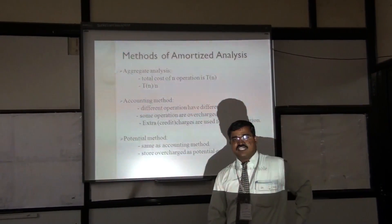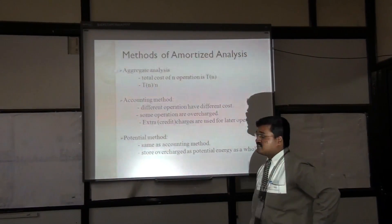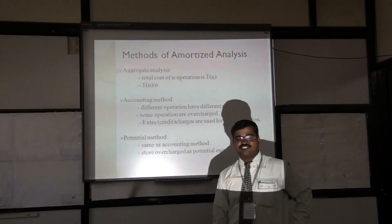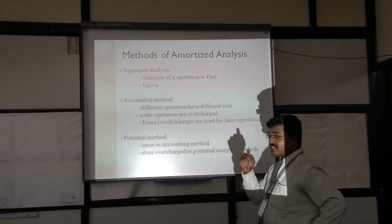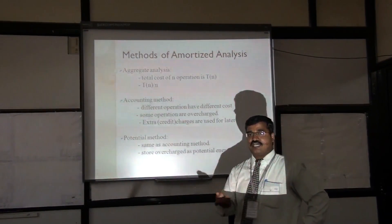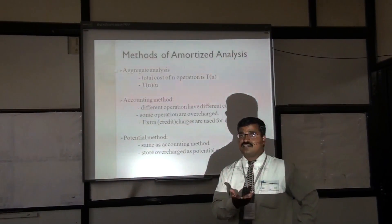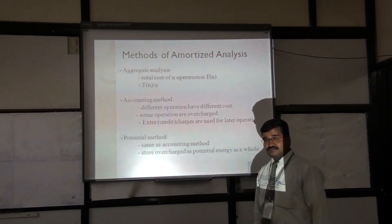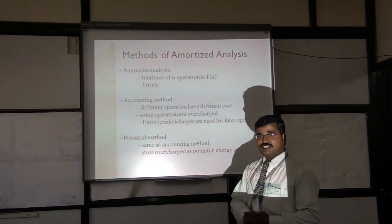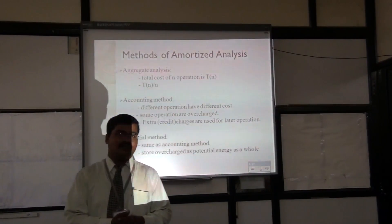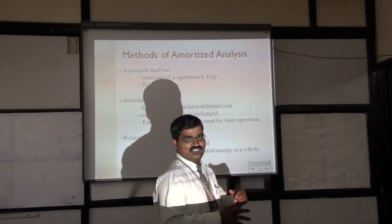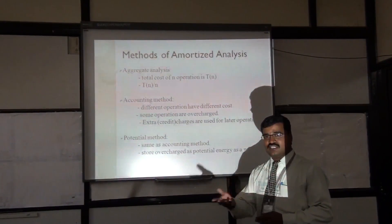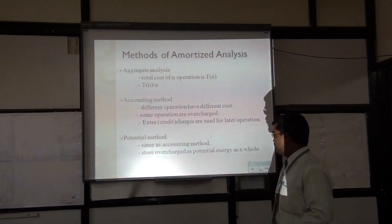What are the different methods which can be used in amortized analysis? There are three different methods: aggregate analysis, accounting method, and potential method. In the aggregate method, the total cost of all the sequence of operations is calculated and divided by the number of operations, giving T(N)/N. The accounting method and potential method are somewhat related to each other, where some operations are given a higher charge and that extra credit is used in the latter case.